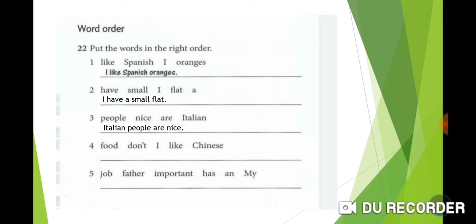Number 4: Food don't I like Chinese. I is the subject at the beginning of the sentence. The verb is like, but we have negation don't, so the negation comes before the main verb. I don't like. Food is the object, but the adjective Chinese comes before the noun. So it becomes: I don't like Chinese food.